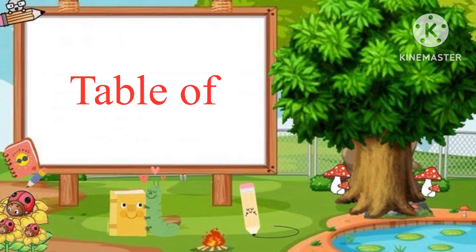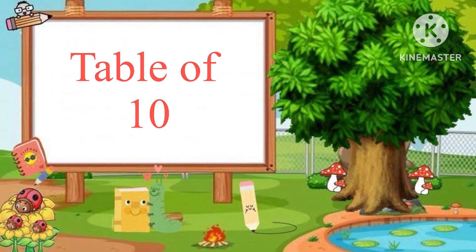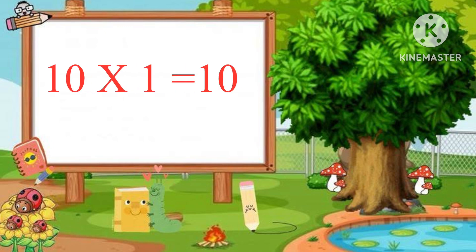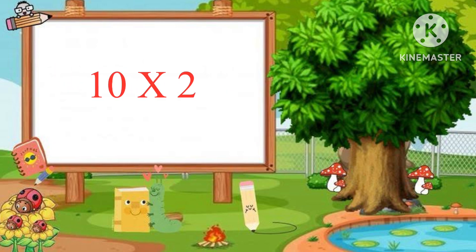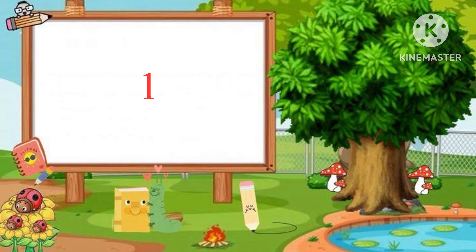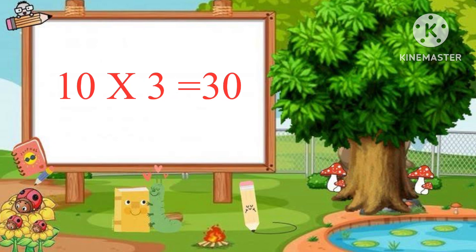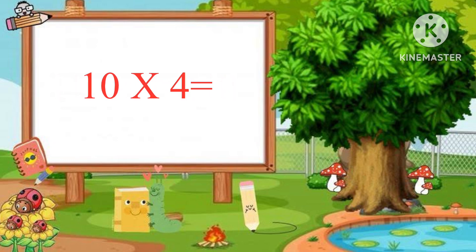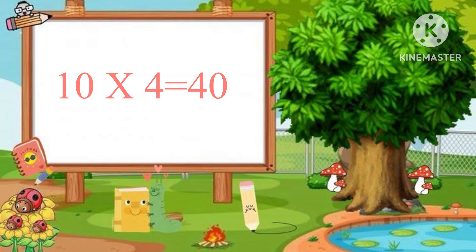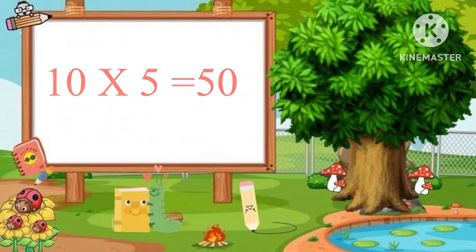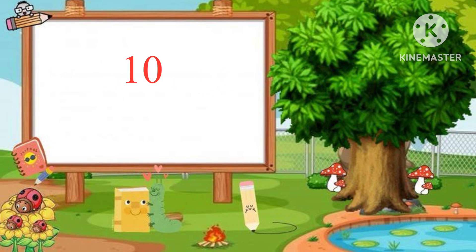Table of Ten. Ten ones are ten. Ten twos are twenty. Ten threes are thirty. Ten fours are forty. Ten fives are fifty. Ten sixes are sixty.